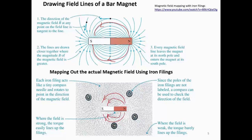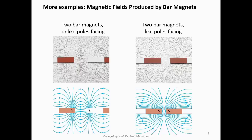The magnetic field always goes from north to south, just like from positive to negative charges. Here are more examples: if you have a north and south pole placed together, this is the field around it. And if you have a north pole and north pole, they repel each other and this is the field around them.